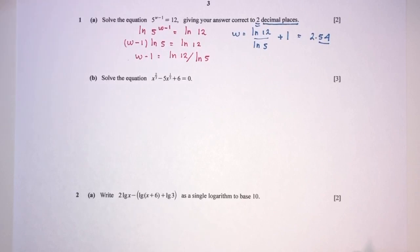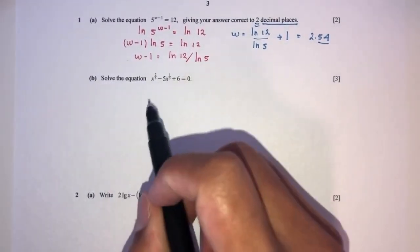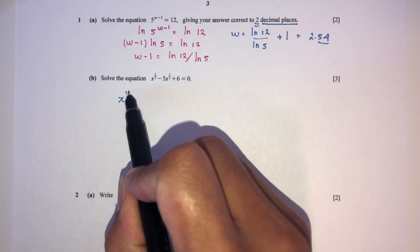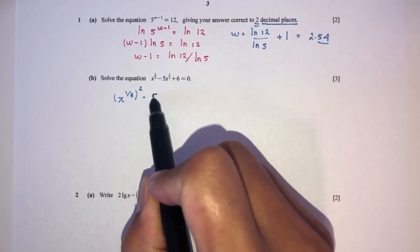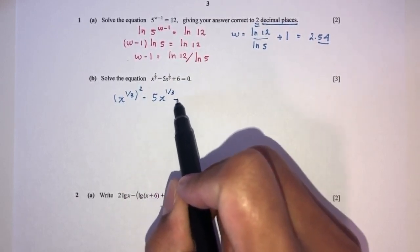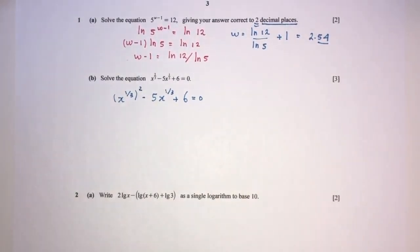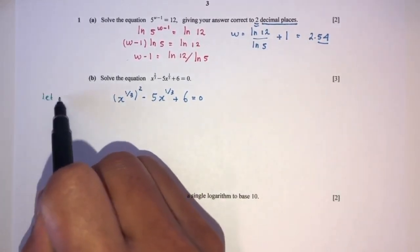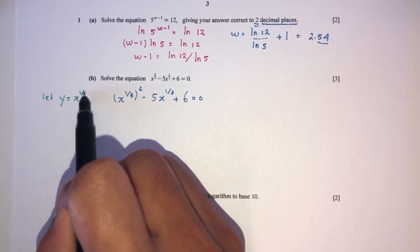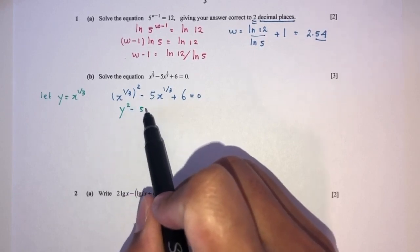For part b, we have to solve the equation. We can rewrite it as (x to the power 1/3) squared minus 5 times (x to the power 1/3) plus 6 equals 0. We use a substitution: let y equal x to the power 1/3. This becomes y squared minus 5y plus 6 equals 0.